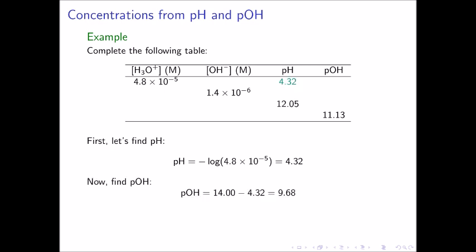We can now use our relationship between pH and pOH to find the pOH value. In this case, pOH is equal to 14.00 minus 4.32, which is 9.68. Finally, we can use the pOH to determine the hydroxide ion concentration. As we saw in the previous slide, the OH⁻ concentration is equal to 10 to the negative pOH, or 10 to the negative 9.68. This is equal to 2.1 times 10 to the negative 10 molar.